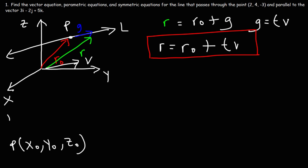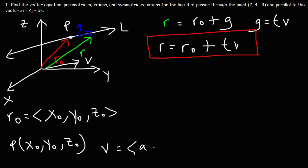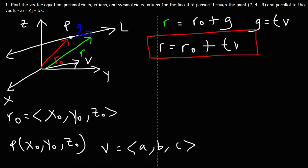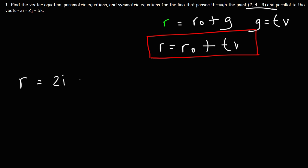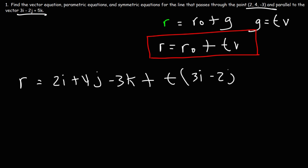The position vector r0 equals (x0, y0, z0), and v is defined by components a, b, c. In this problem, a is 3, b is negative 2, c is 5, and x0 is 2, y0 is 4, z0 is negative 3. So r0 is 2i plus 4j minus 3k, and then plus t times vector v, which is 3i minus 2j plus 5k.